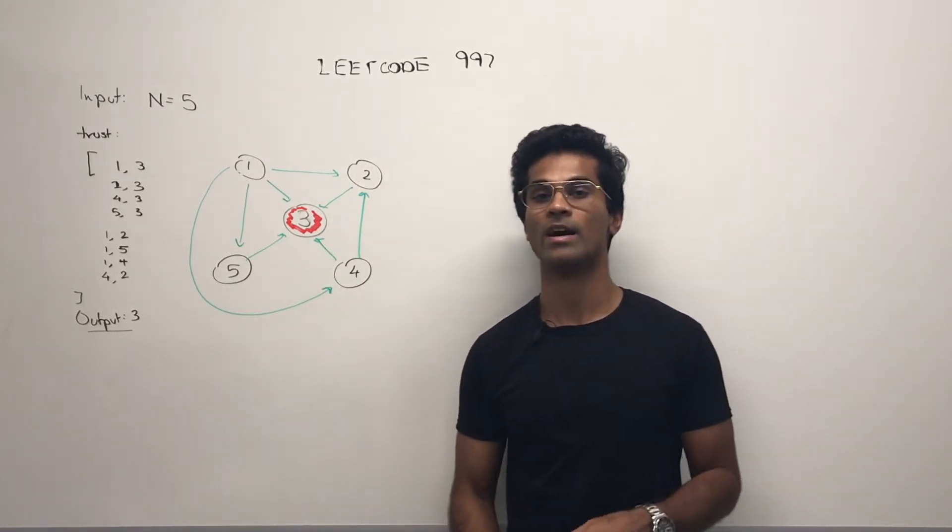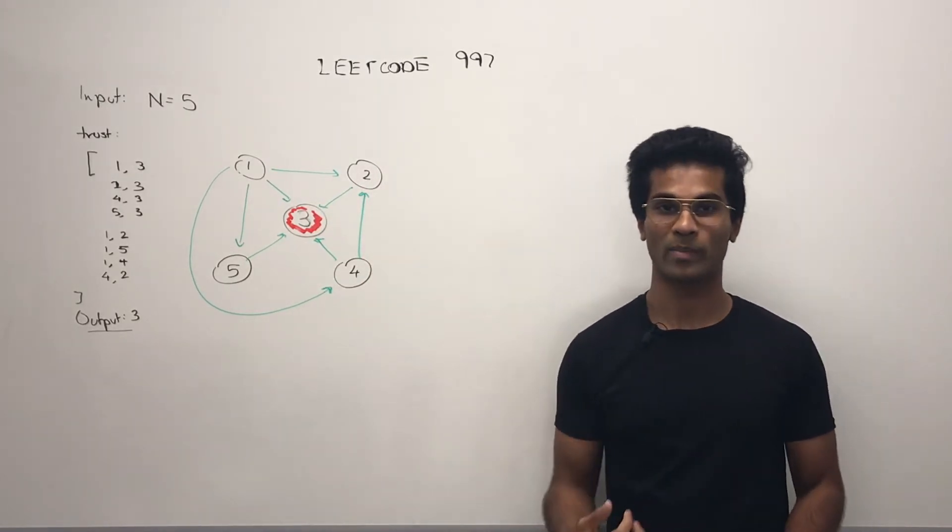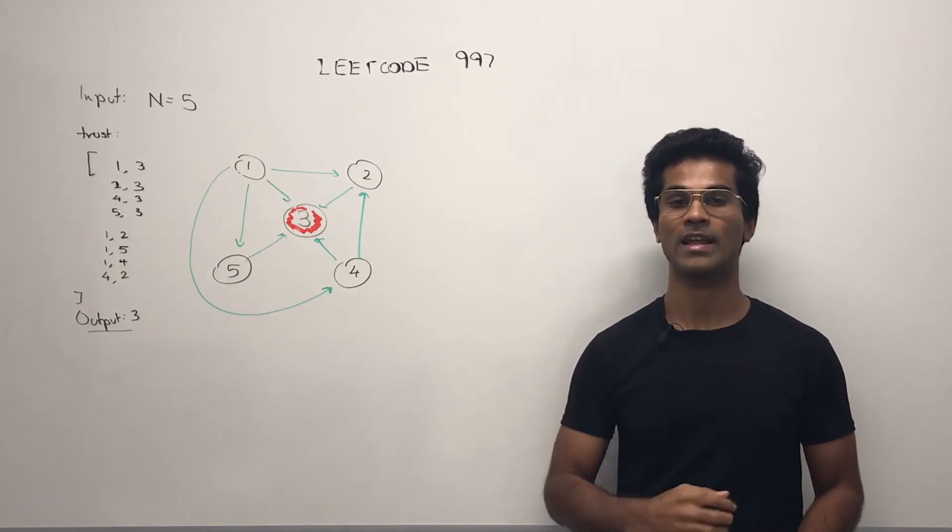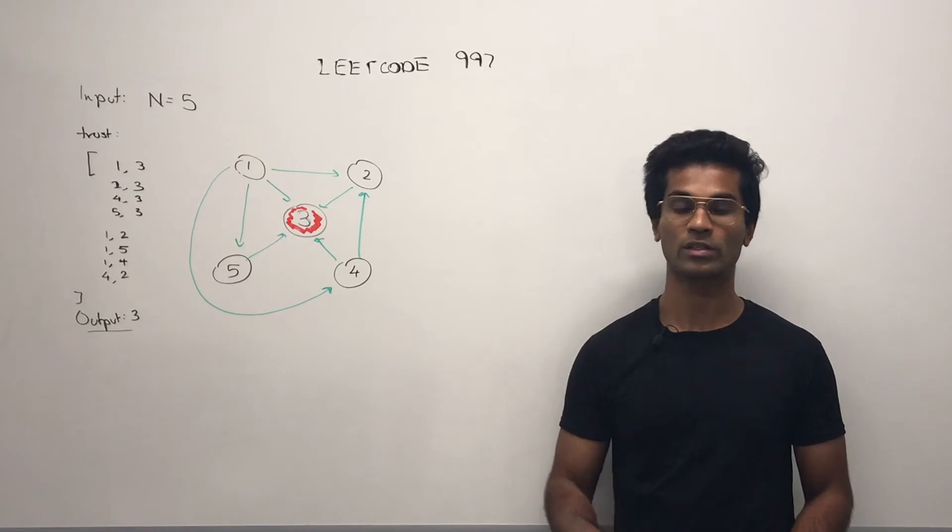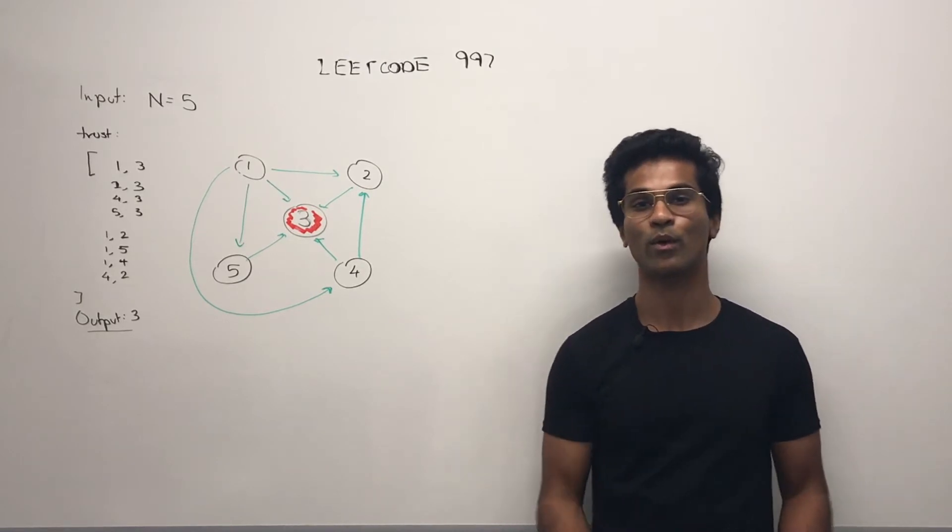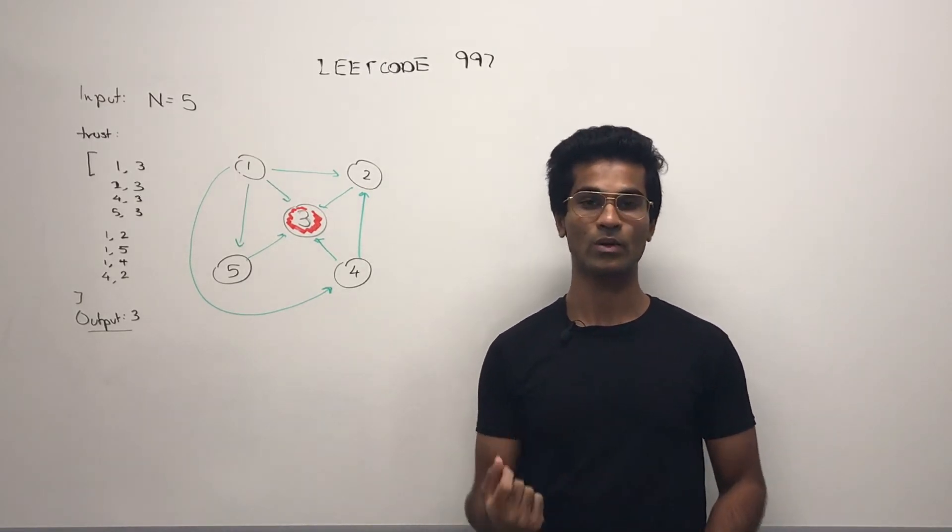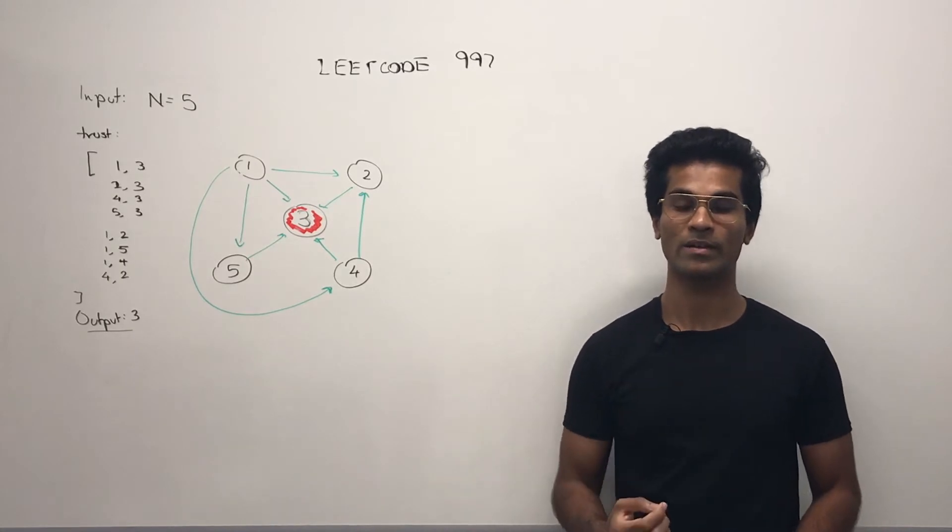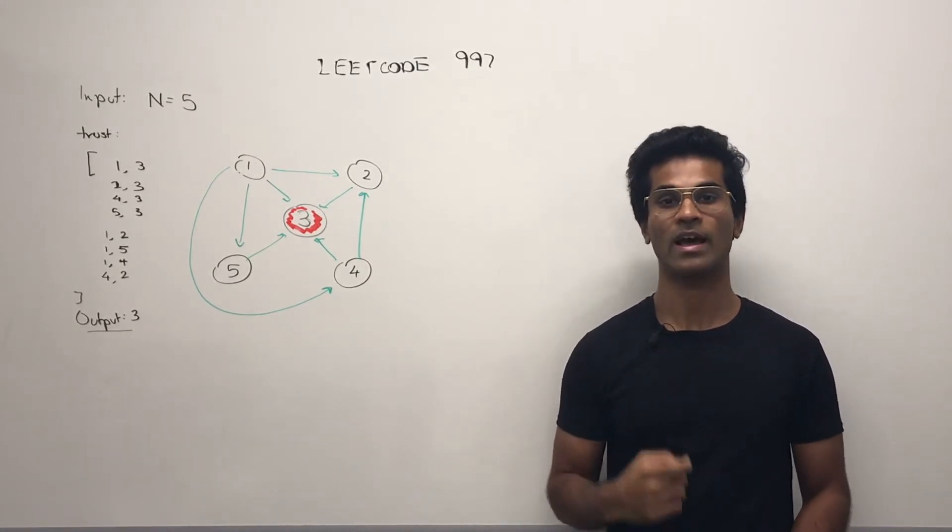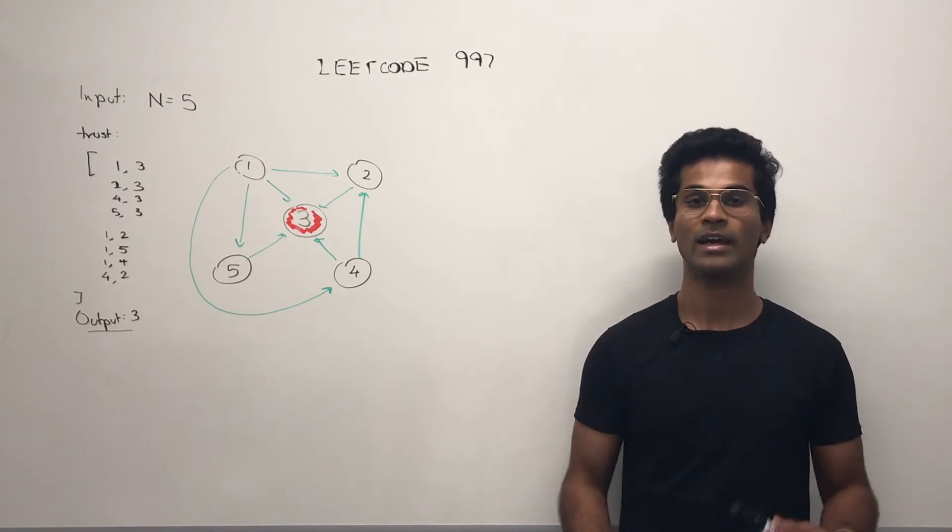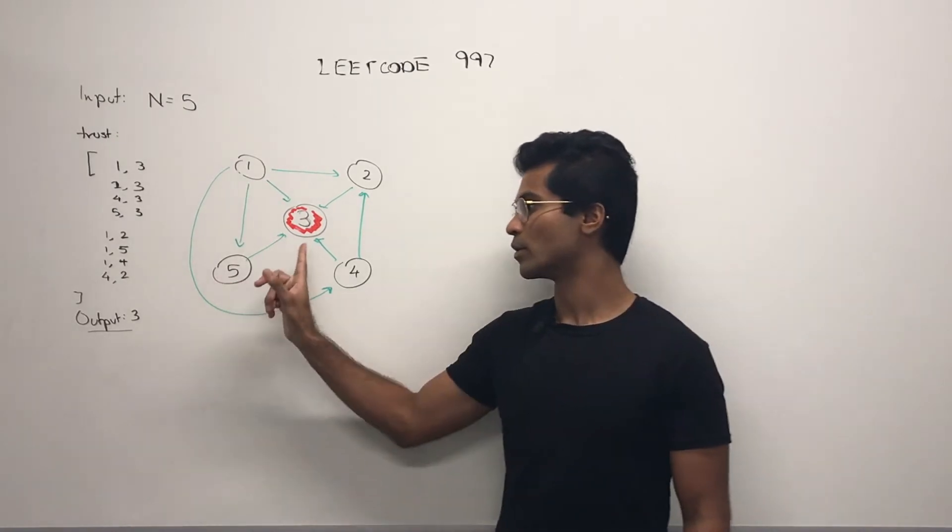So this is defined as a trust. Our job is to find the node such that everyone else trusts this node and this node trusts no one else. In other words, we want to find the node which has an in degree of all the other nodes, and this particular node has no outgoing edges. In our case, the output is going to be 3.